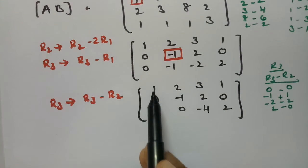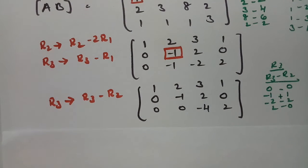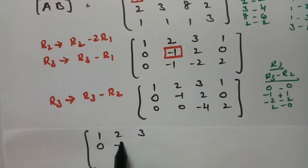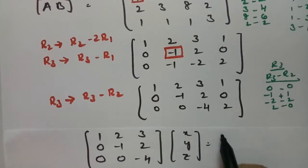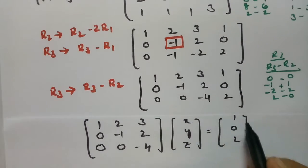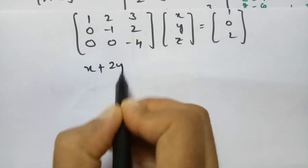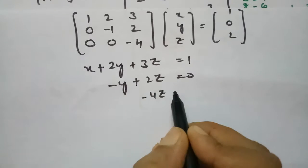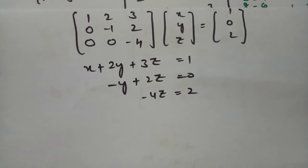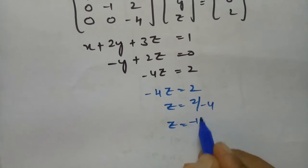After making all the required entries zero, we split back into normal equation form. The equations are: x + 2y + 3z = 1, minus y + 2z = 0, and minus 4z = 2. From the last equation, z = 2 divided by minus 4, so z = minus one-half.